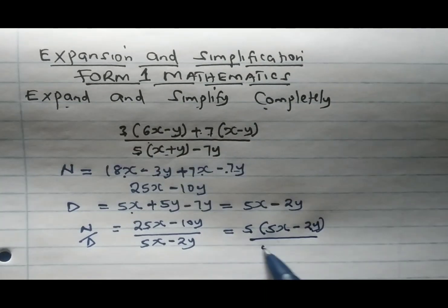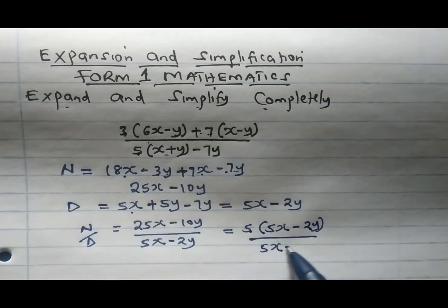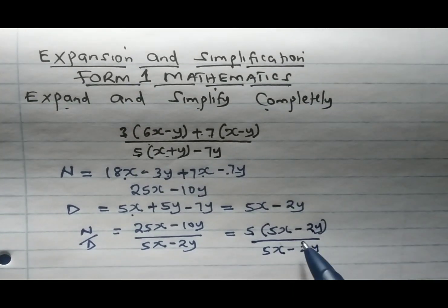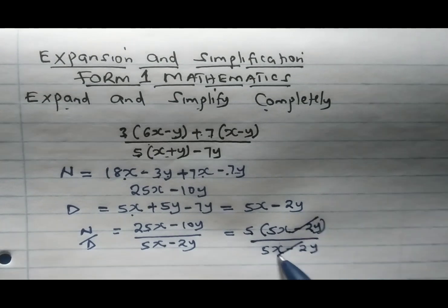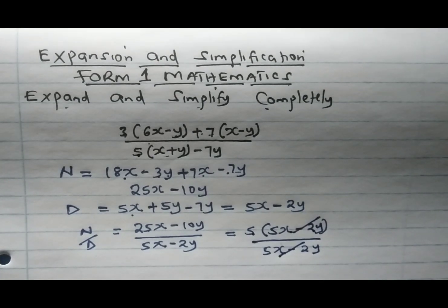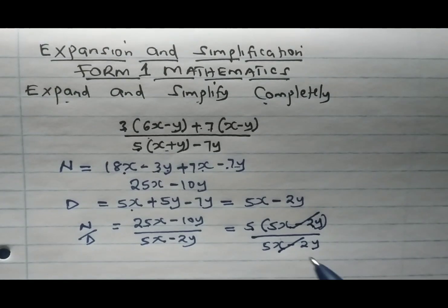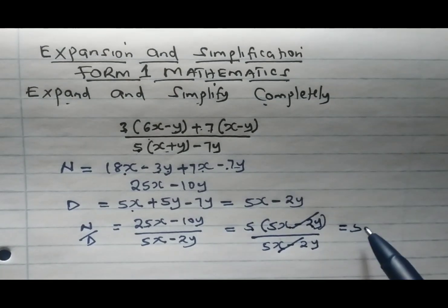5x minus 2y cancels 5x minus 2y, and the final answer to this question is equal to 5.